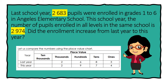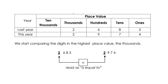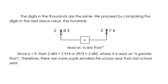It can be observed that this year's enrollment is greater than last year's. We start comparing the digits in the highest place value — the thousands. Looking back at our examples, 2,683 and 2,974: the digits in the thousands place are equal. Since the digits in the thousands place are the same, we proceed by comparing the digits in the next place value, the hundreds. Since 6 is less than 9, then 2,683 is less than 2,974, or 2,974 is greater than 2,683.